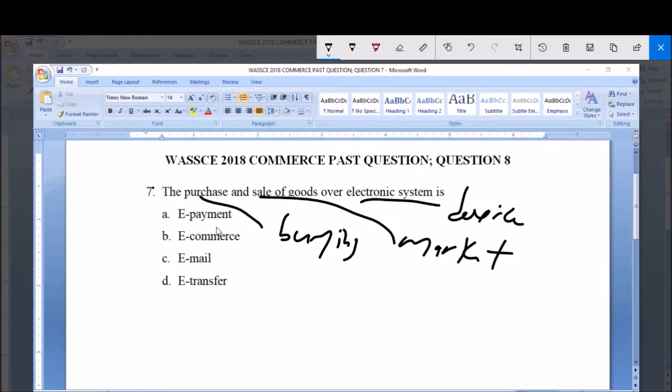A: e-payment. Option B: e-commerce. Option C: e-mail. Option D: e-transfer. The correct option here is what we call e-commerce, which is option B. E-commerce. As we all know, commerce means the art of trading...